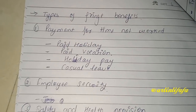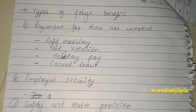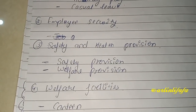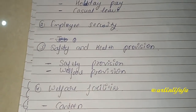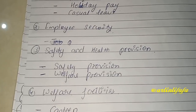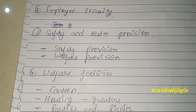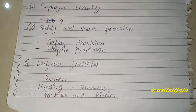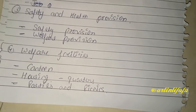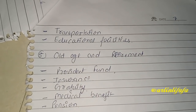Payment for time not worked میں شامل ہیں: holiday pay، paid vacation، casual leave۔ Employee security میں کچھ benefits دیتے ہیں — جہاں وہ working ہے وہاں security provide کرتے ہیں۔ Safety and health provision، welfare provision الگ دیتے ہیں۔ Fringe benefits کے اندر canteen facility، housing facility، parties and picnics، transportation اور educational facilities بھی دی جاتی ہیں — اس کے بچوں کو یا خود آگے پڑھنے کے لیے۔